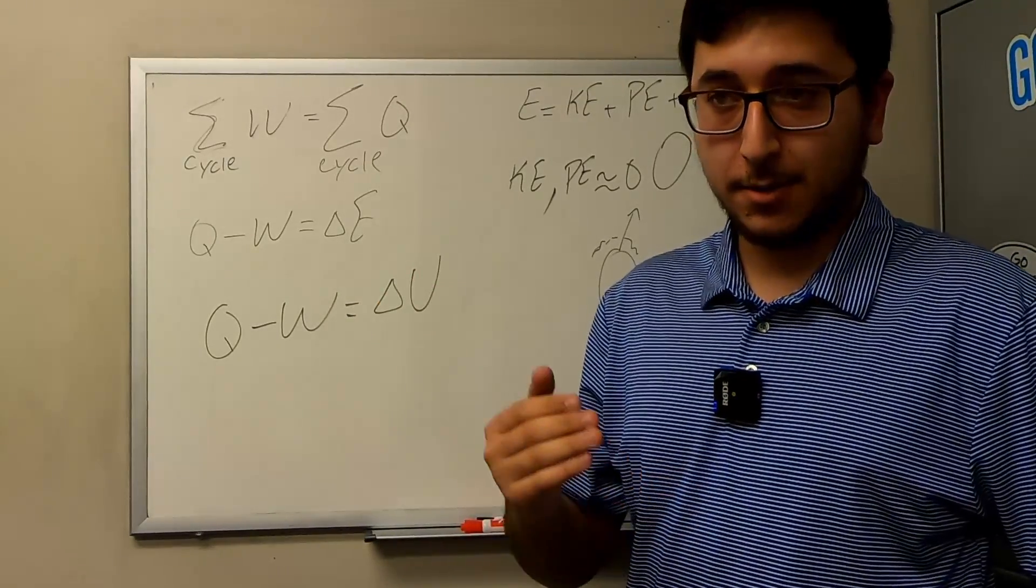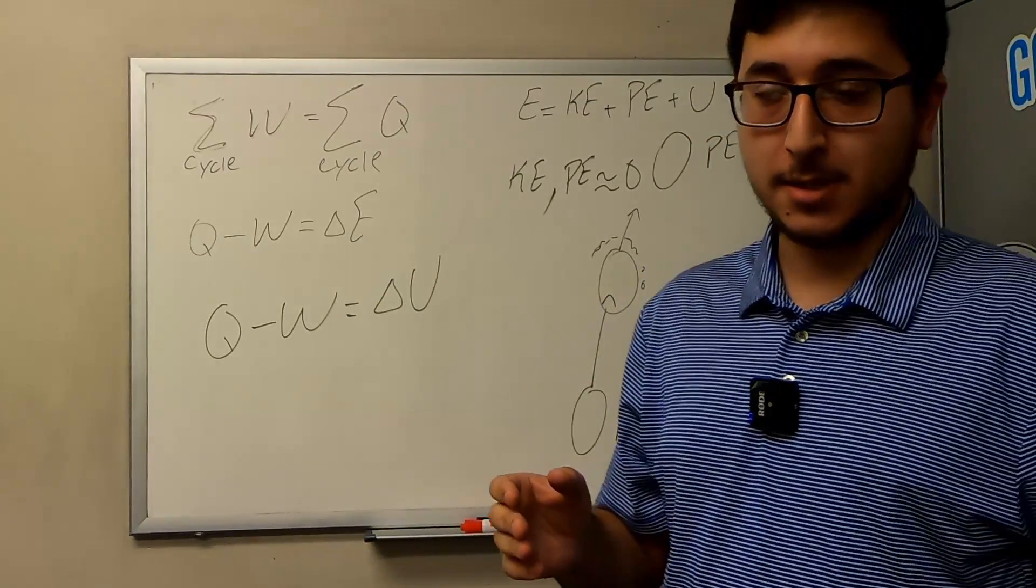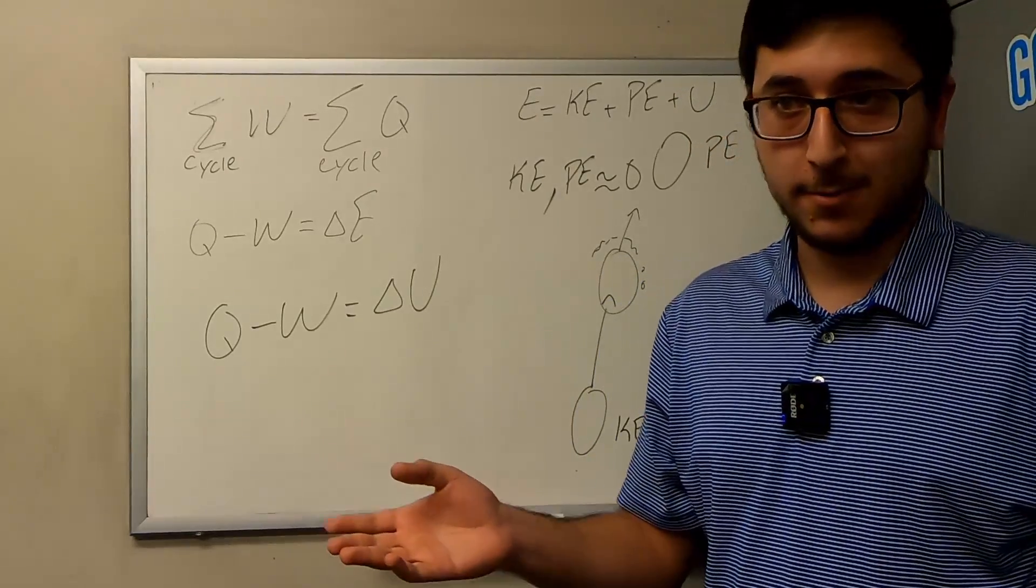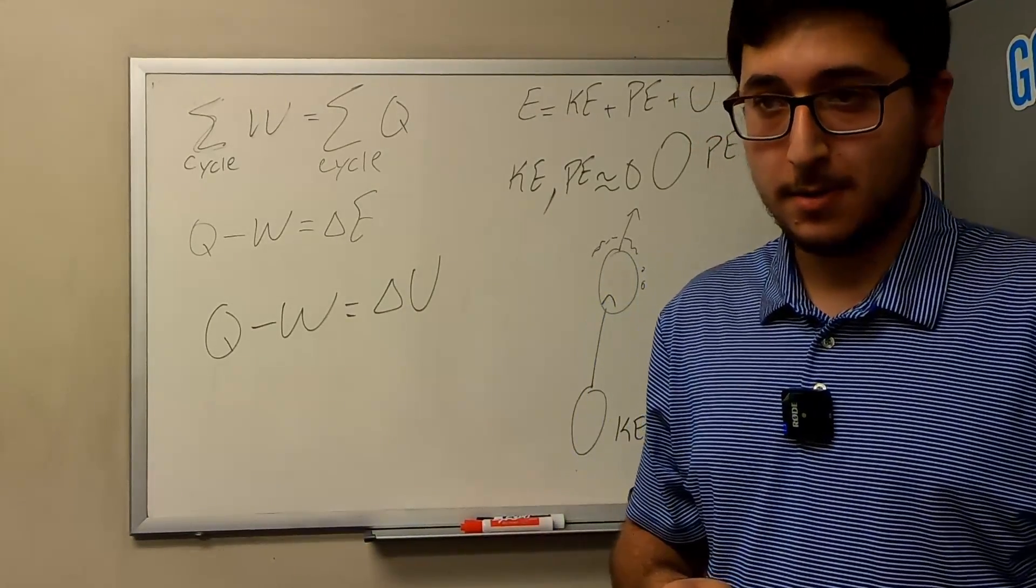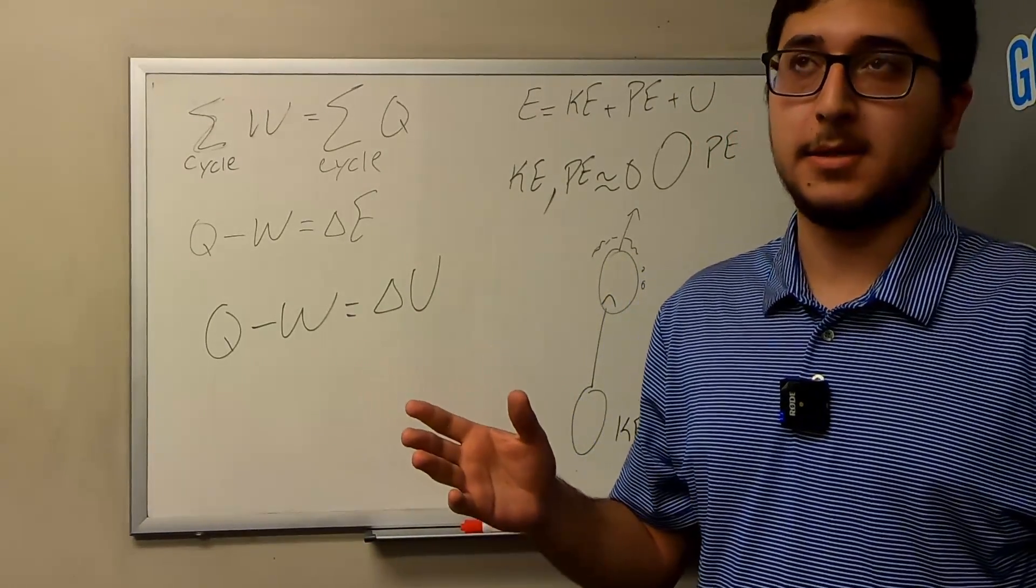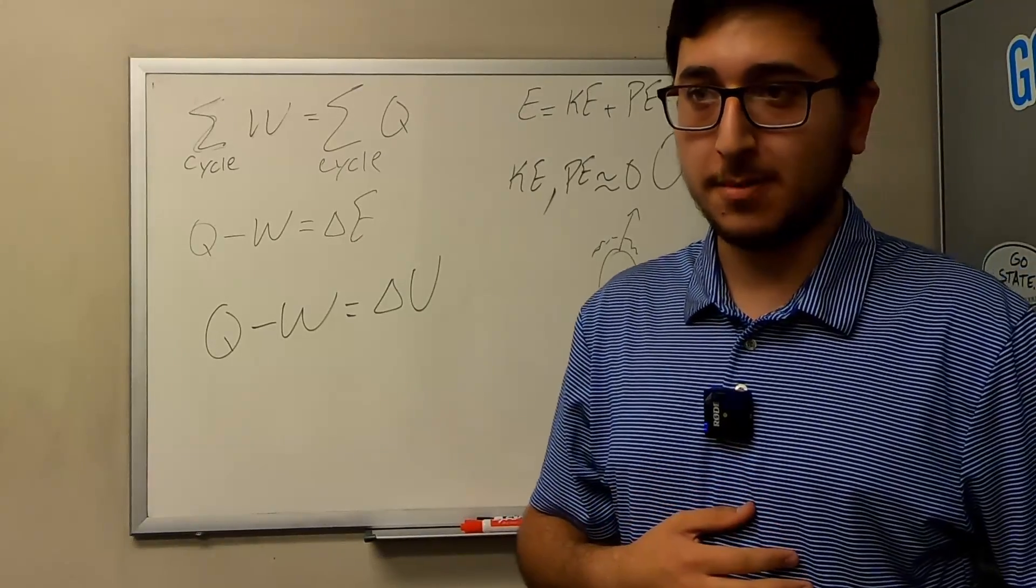It might not sound like a lot, but three chapters of thermodynamics is basically equivalent to seven chapters of a regular calculus book. It's over at least 300 pages just the three chapters.